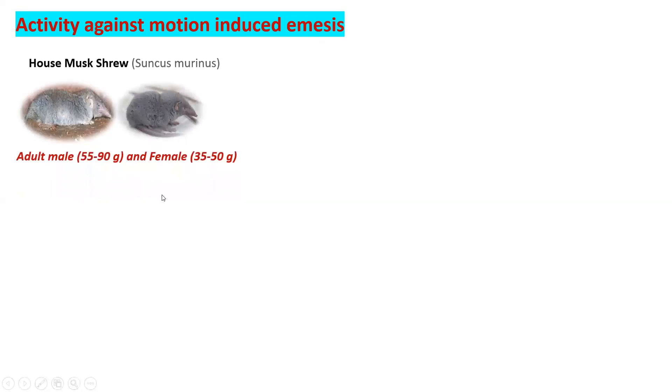The second model is activity against motion-induced emesis. It sometimes happens that people during a journey will experience emesis or vomiting. The same scenario is replicated in this animal model — activity against motion-induced emesis.